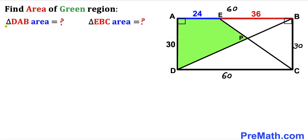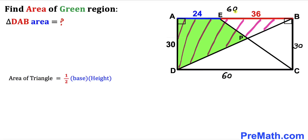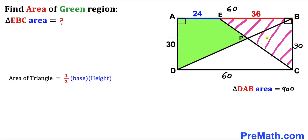Let's focus on right triangle DAB. Using the formula area = ½ × base × height, the base is 60 and the height is 30. Therefore the area of triangle DAB is ½ × 60 × 30, which gives us 900 square units.